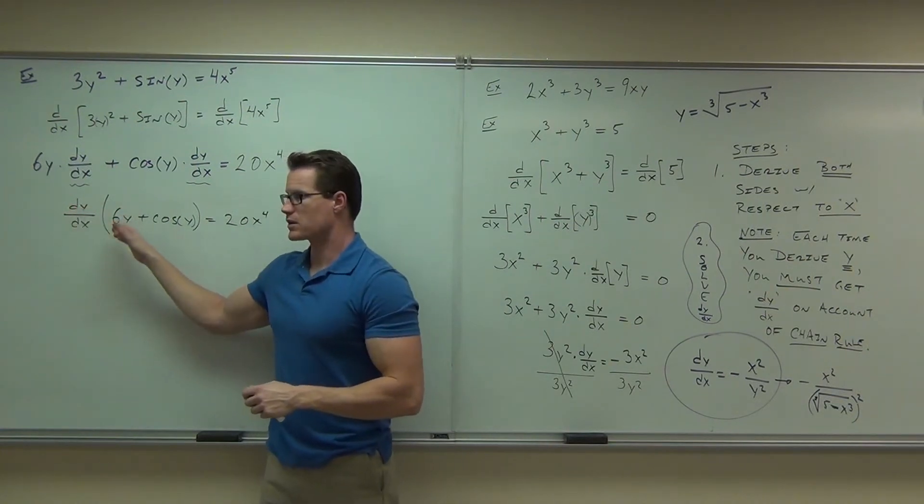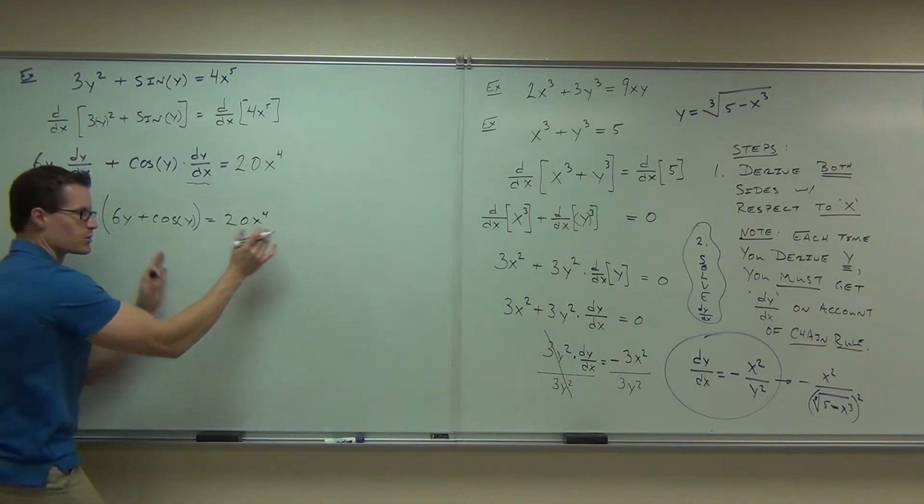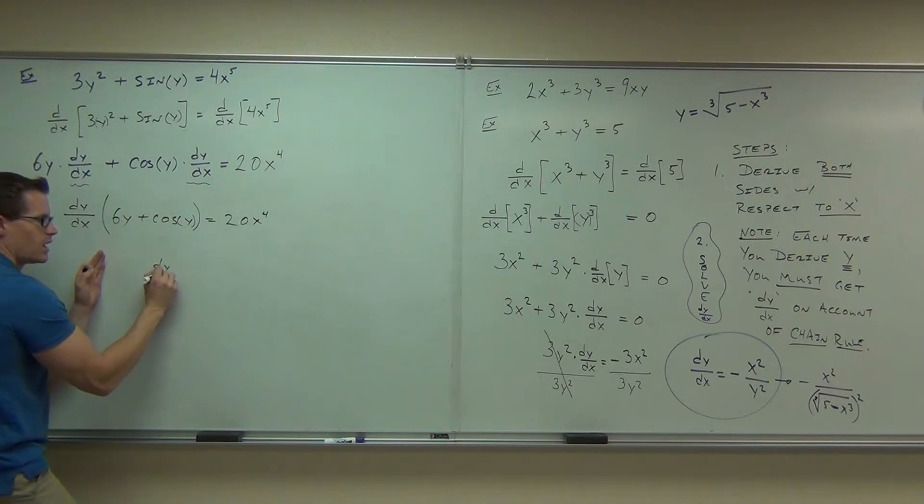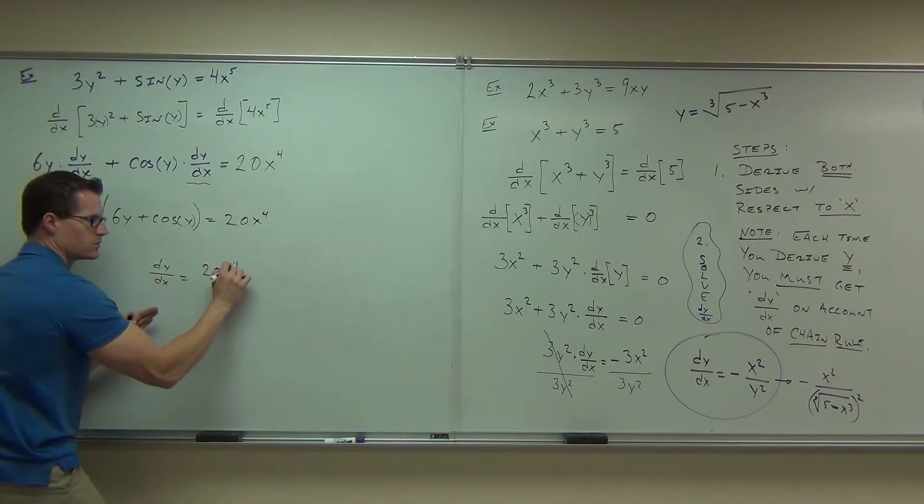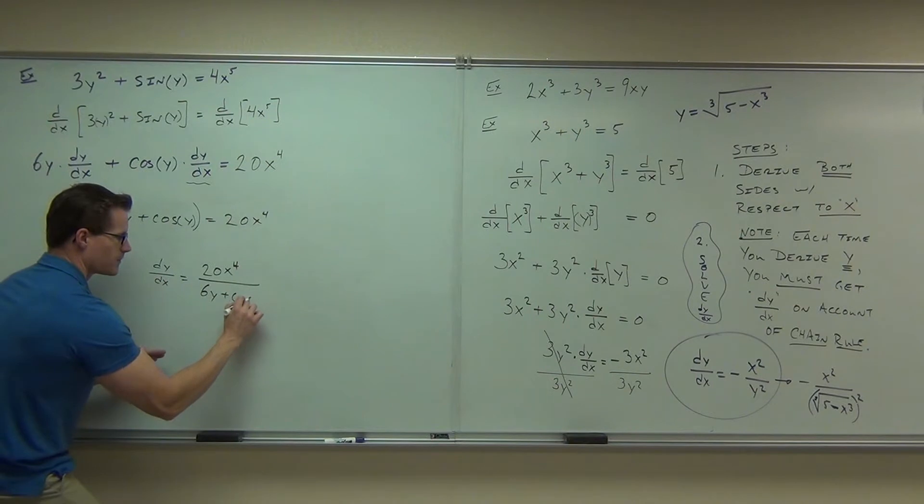This is being multiplied, correct? So if we divide both sides by that, divide here, divide here, we're dividing by this expression, we get dy/dx equals 20x to the 4th, cool.